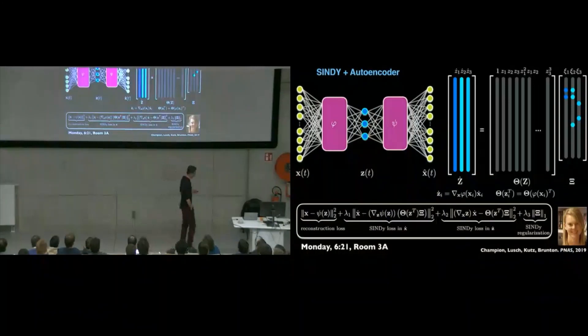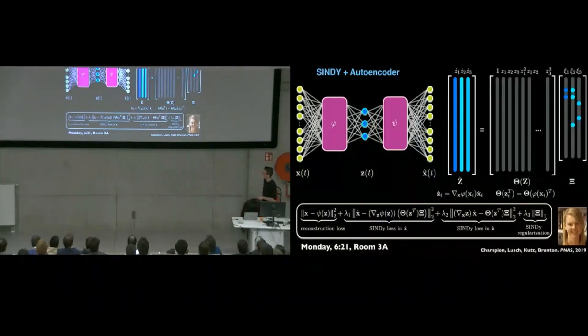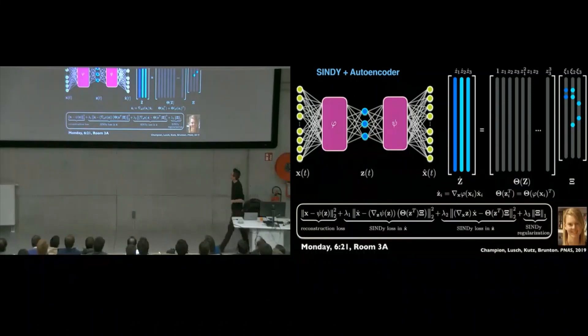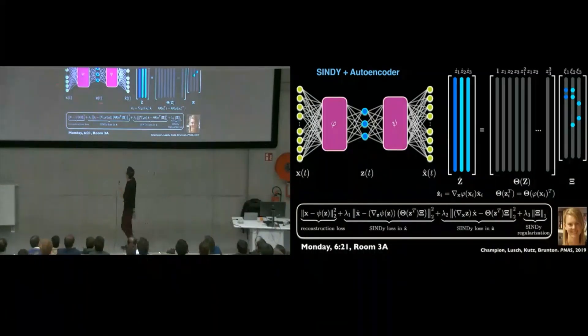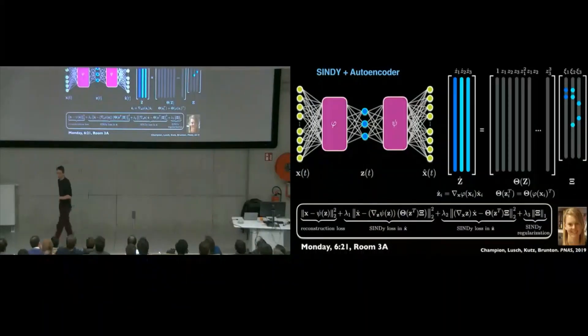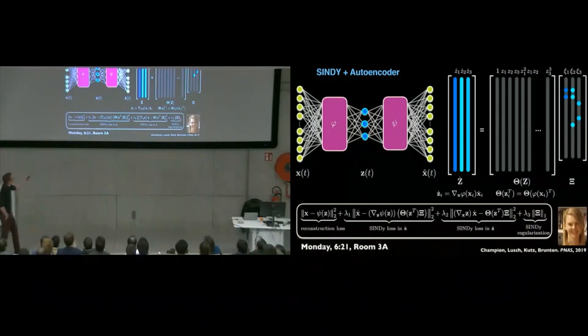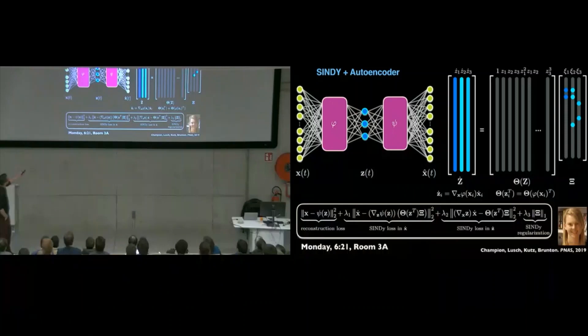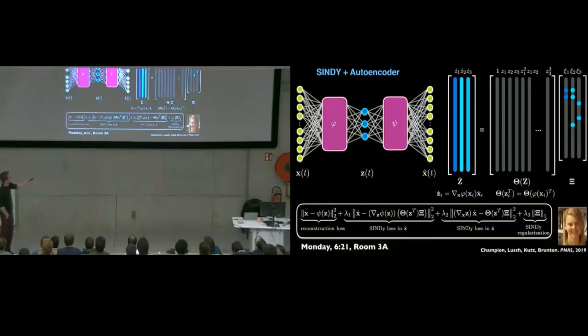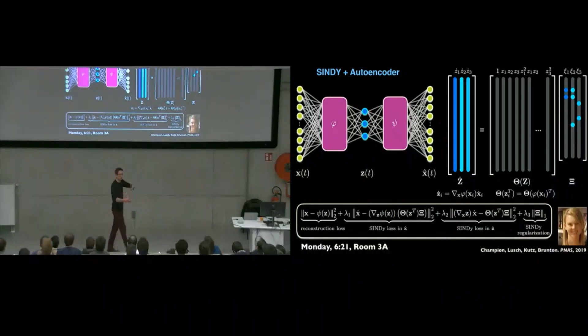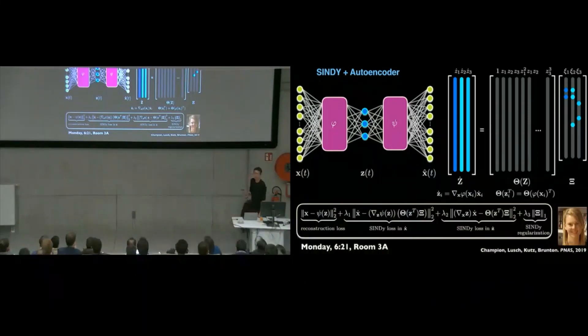This is work by Kathleen Champion, who was a PhD student with us. What she did was basically combine this autoencoder network with a SINDy parsimonious modeling procedure in the middle. So what you do is you have high-dimensional data. You want to learn a low-dimensional representation through this autoencoder. But then you want to develop a nonlinear dynamical systems model for how those latent variables evolve together in time. So this is a joint optimization, trying to find a coordinate system and a nonlinear model. It's kind of a hard problem. It took us a long time to train this network.